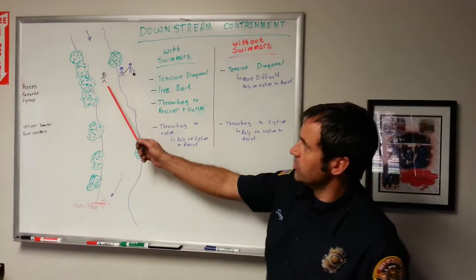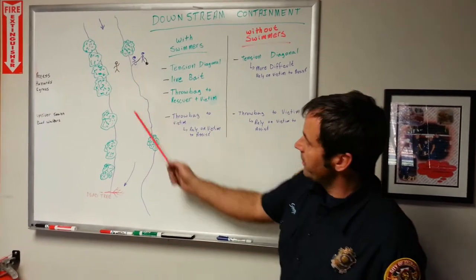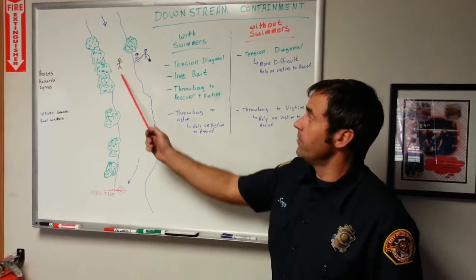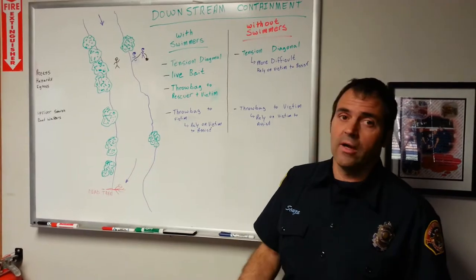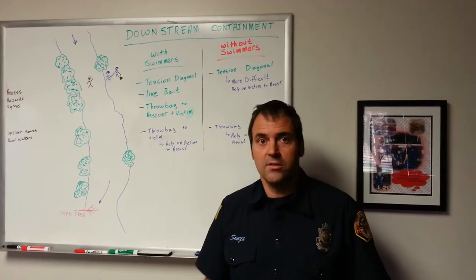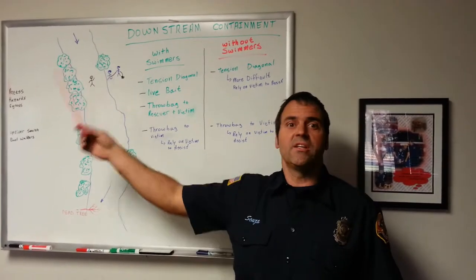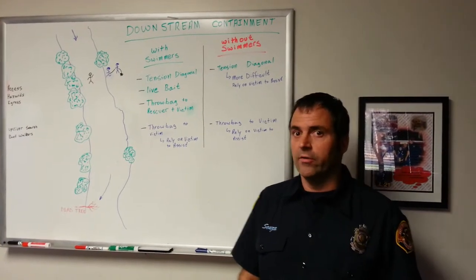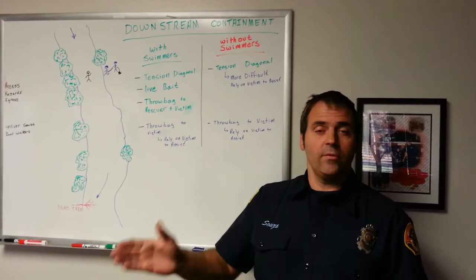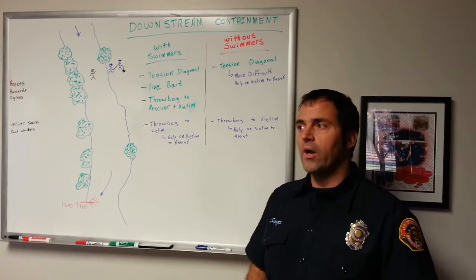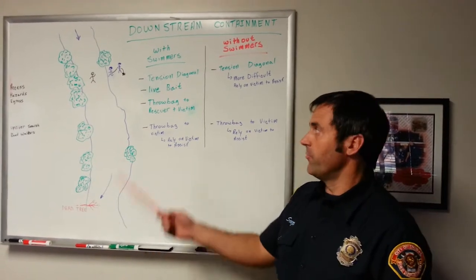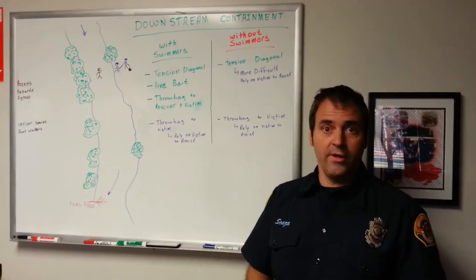Here we have our swimmer victim. He's being swept downstream, approaching some hazards — maybe a dead tree, a strainer, or some other hazard. Being in the river is a hazard, so we want to get him out as soon as possible. Downstream containment is closing the bottom of the box. He fell in upstream somewhere, and based on river flow and time in the water, we've placed downstream containment here to wait for him. We want it far enough downstream that he won't have passed, yet not so far that he drowns before arriving — it's a balancing act.